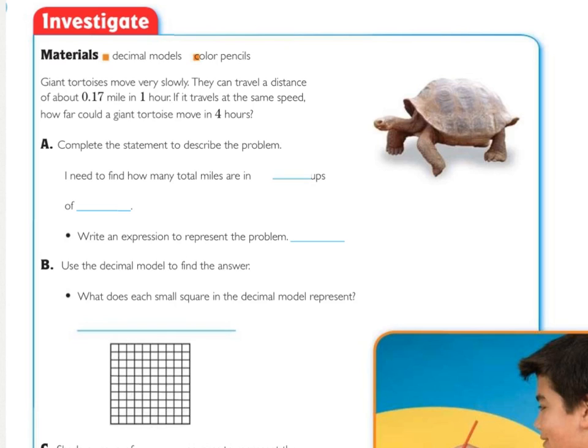Squiggle underline what you're being asked to find, circle the important information, and underline any keywords to help you know which operation we are going to be performing. You should have squiggle underlined how far can a giant tortoise move in four hours, circled four hours and 17 hundredths of a mile in one hour, and then a clue word is same speed.